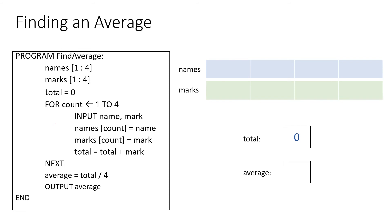Here are all the variables: the names and marks arrays, total set to zero, and the average variable. We input 'Bill' and 80. Then total = total + mark: zero plus 80 gives us 80. The counter goes to 2, we input another name and mark, and total = total + mark: 80 plus 76 gives us 156.